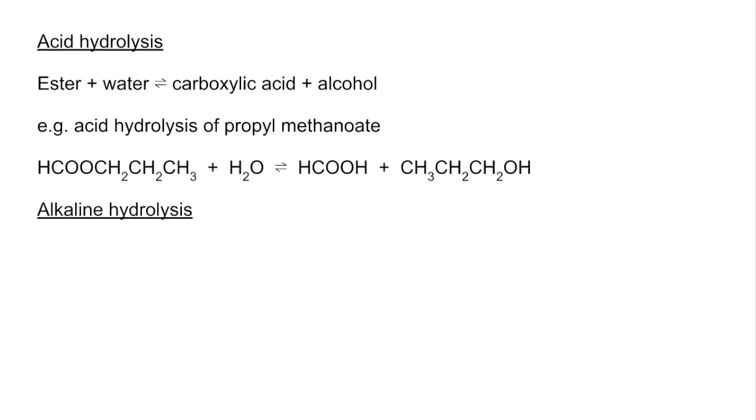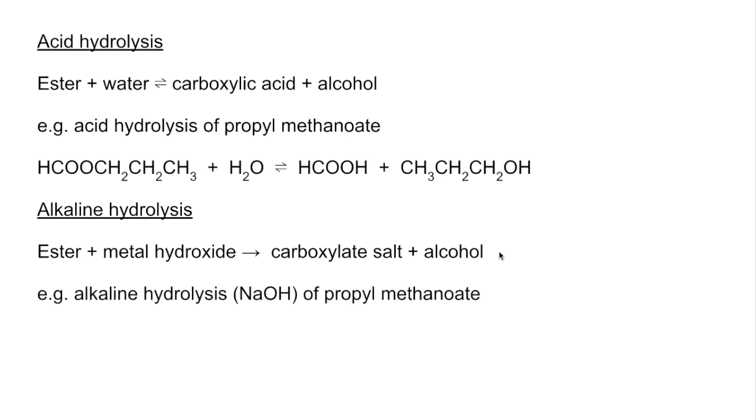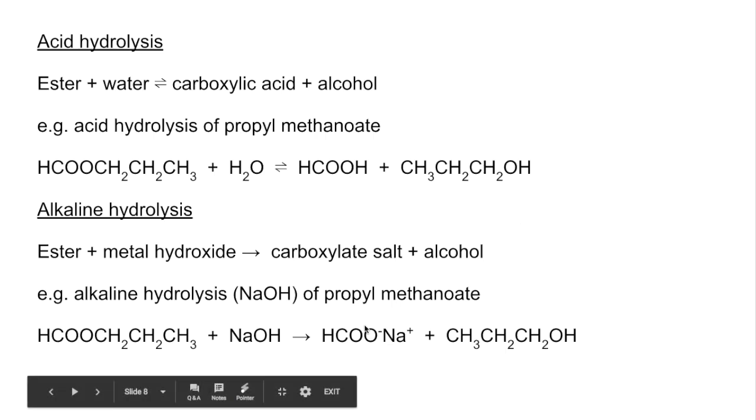Alkaline hydrolysis now. So this time we take the ester and react it with the metal hydroxides. The classic one to use would be sodium hydroxide. And instead of getting a carboxylic acid, we get a carboxylate salt. But we still get the alcohol. So the example I'm going to do is the alkaline hydrolysis using aqueous sodium hydroxide of propyl methanoate. So the same bond breaks. But instead of getting the carboxylic acid now, we get the sodium salt of that acid, which is sodium methanoate.